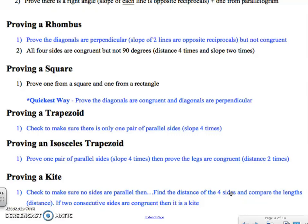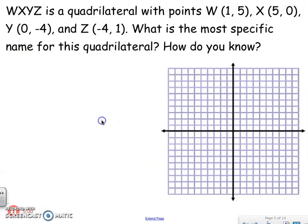If you need more help on each way of proving it, there are YouTube videos below this video. So let's look at some examples. You have a quadrilateral with those coordinate points — what's the most specific name for the quadrilateral, and how do you know? First off, you need to graph it.